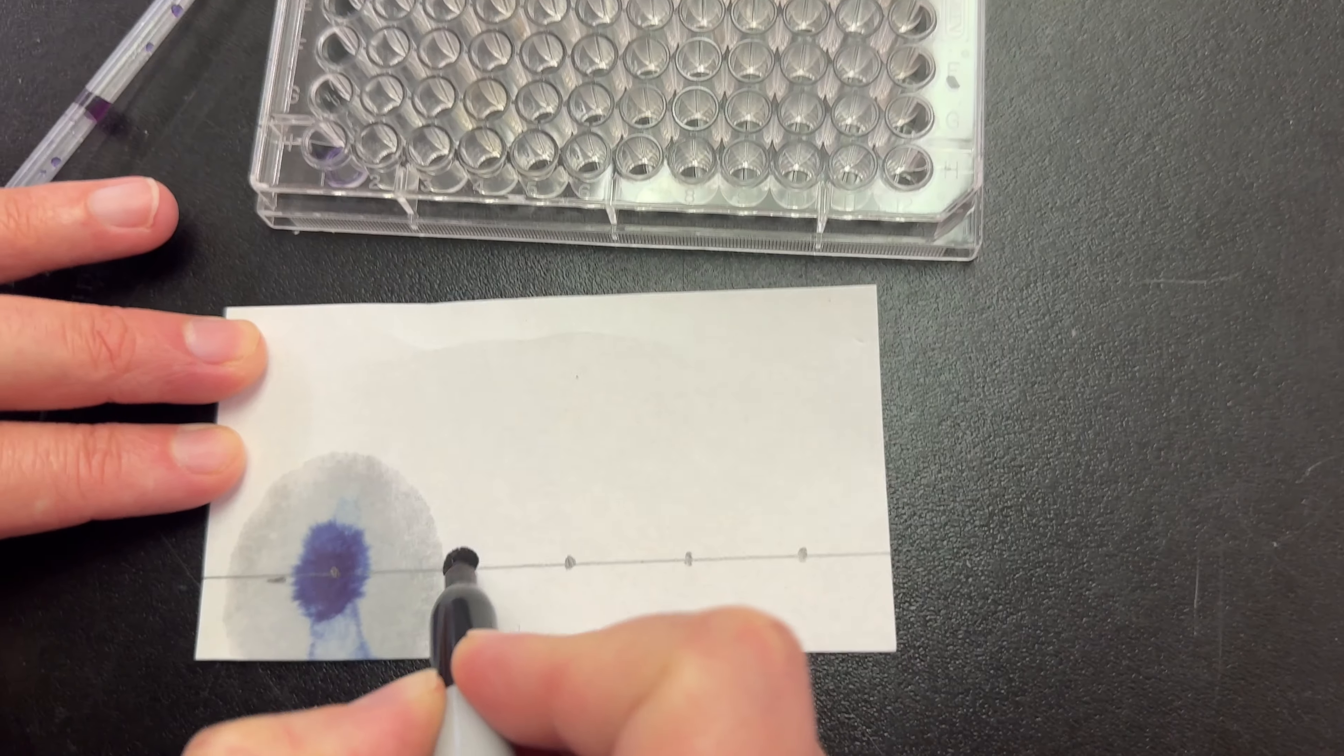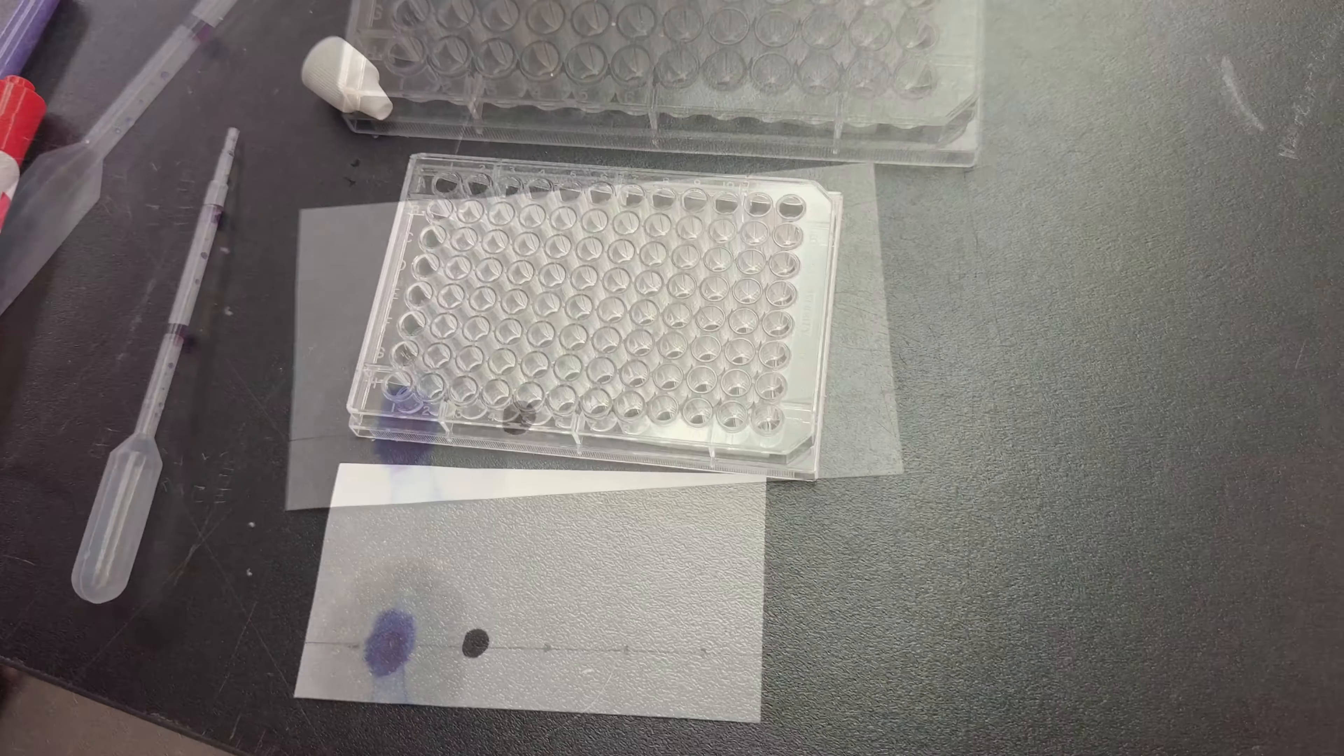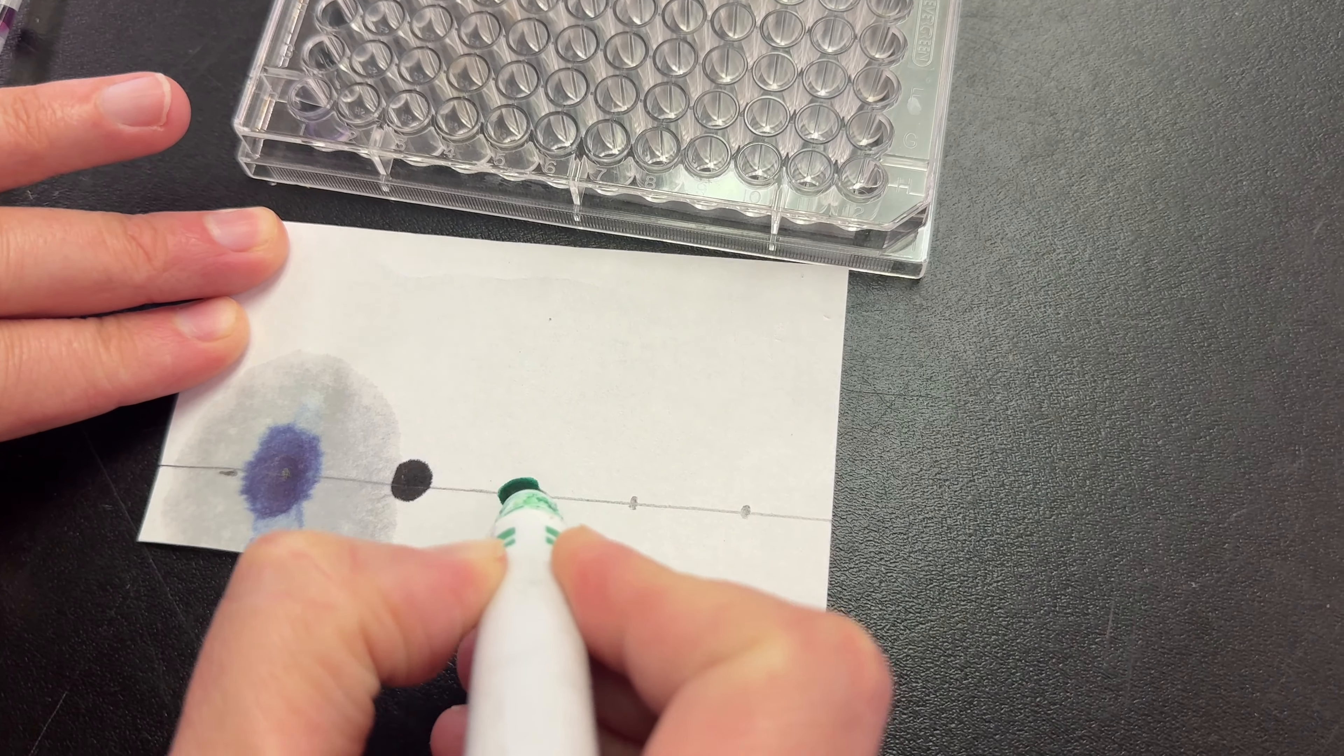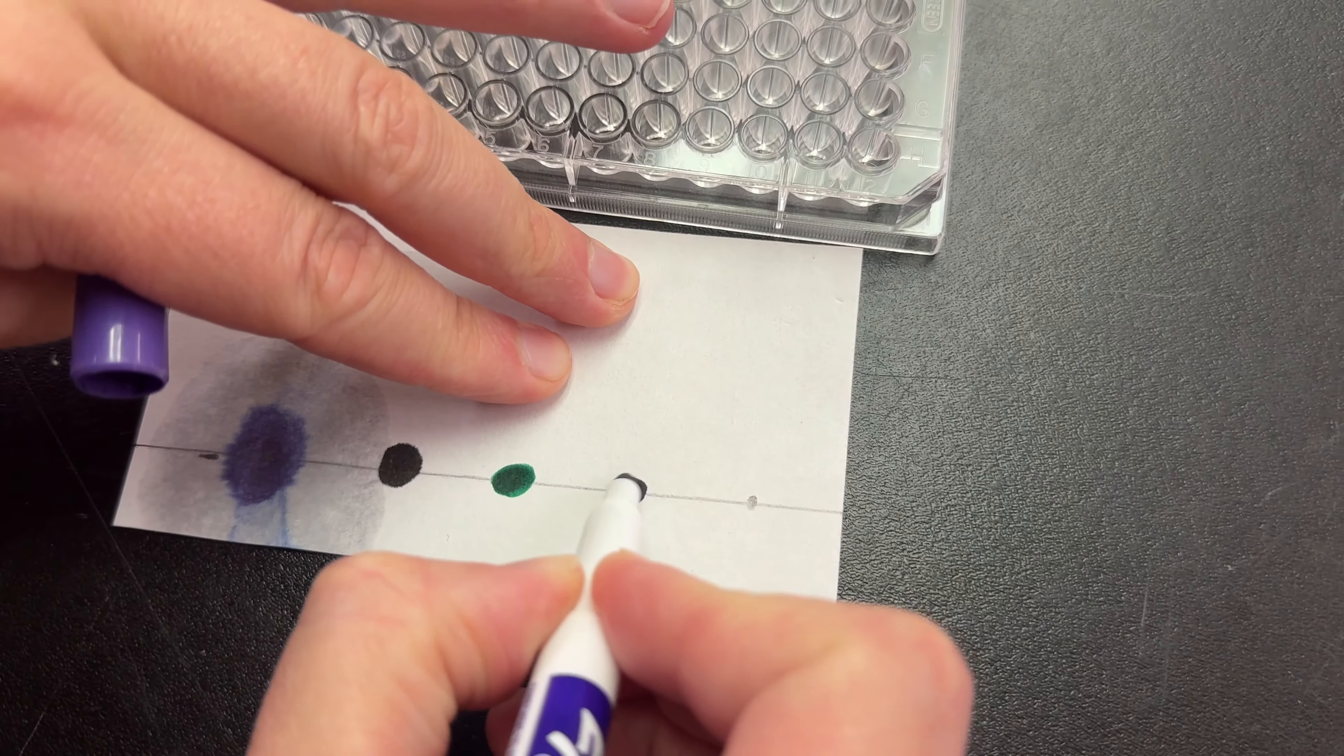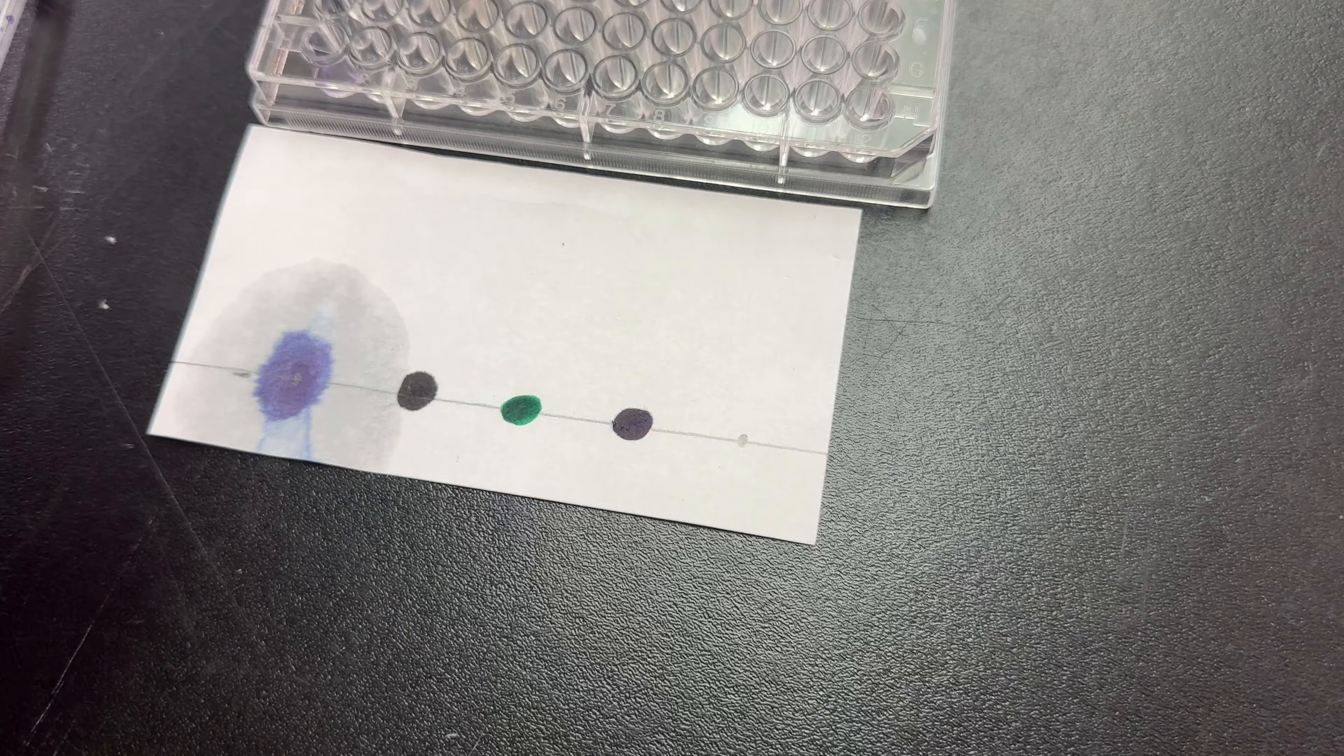Step four: experiment with other dark water soluble liquids such as another felt pen, food coloring, beet juice, etc. Use a mini pipette to put drops of these materials on the other marks. For this experiment, I'm just going to use other felt tip pen colors.